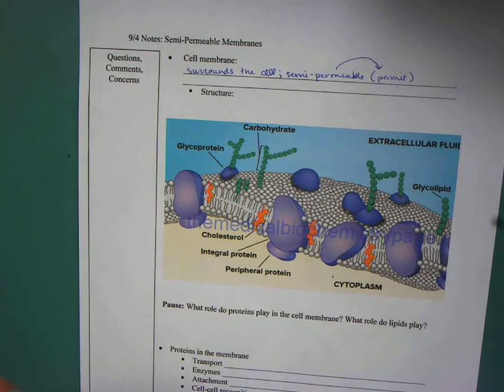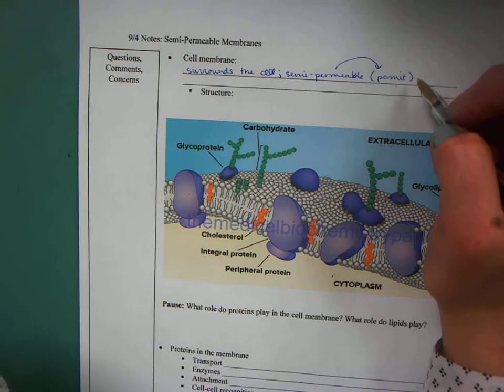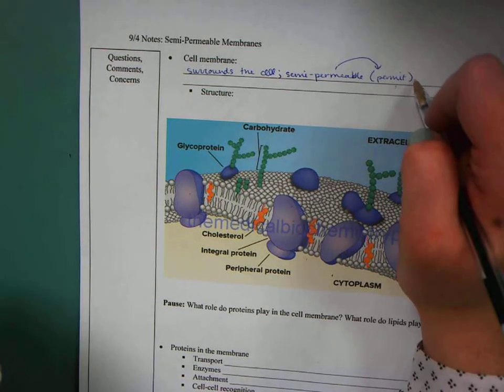And so what we're going to talk about today is sort of how it does that and some of the methods that we'll look at in terms of getting the things out of the cell that it needs to get out, like vacuoles, and getting things in that it needs like water and food.